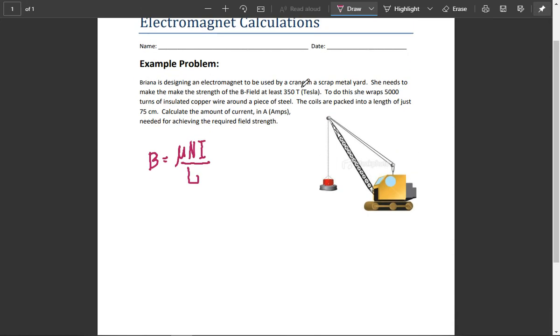So it says Brenda is designing an electromagnet to be used by a crane in a scrap metal yard. She needs to make the strength of the field at least 350 tesla.